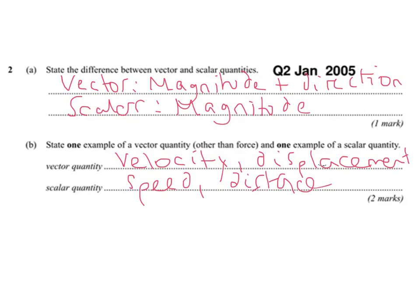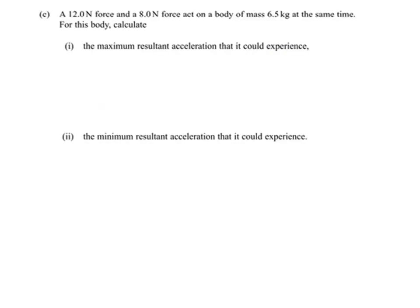Okay, so when we actually get into the business end of this question. So a 12 newton force and an 8 newton force act on a body of mass 6.5 kilograms at the same time. So calculate the maximum resultant acceleration it could experience, and obviously the second part is the minimum.